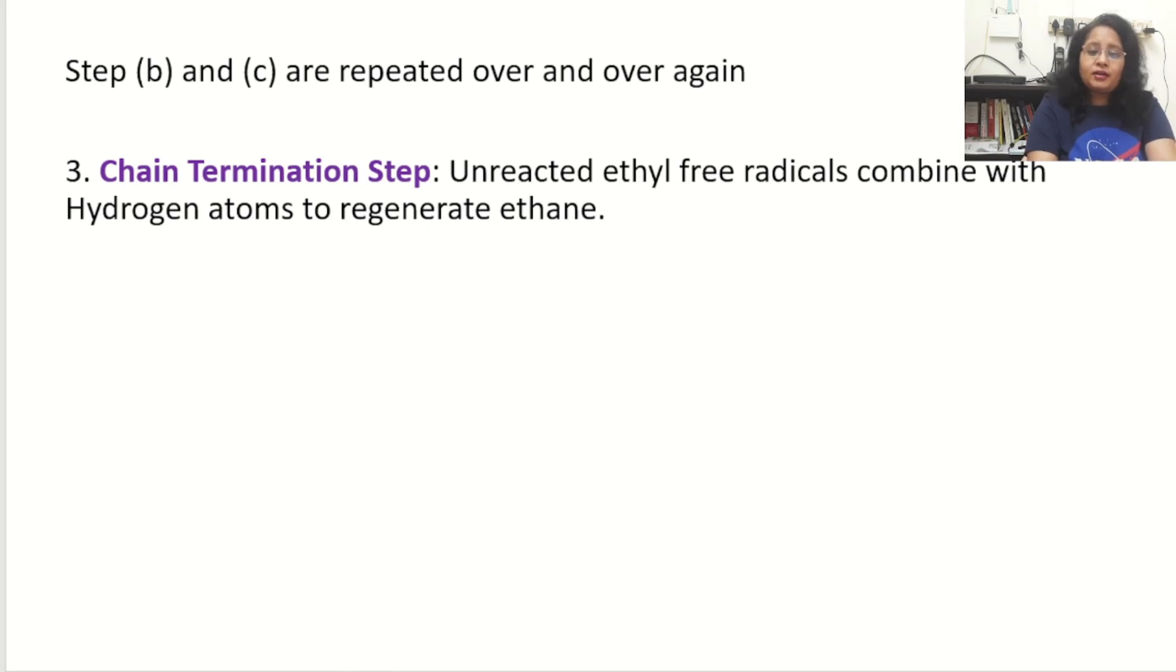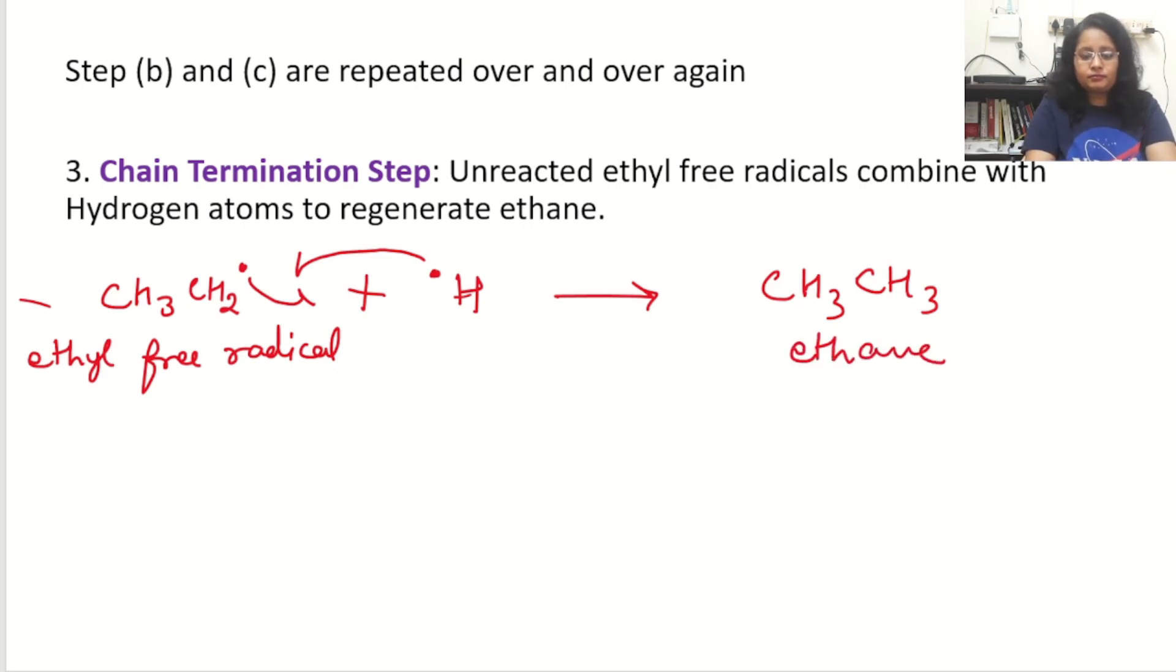Chain termination step: unreacted ethyl free radical combines with hydrogen atom to regenerate ethane. The ethyl free radical will combine with the hydrogen atom. So CH3 and this electron will go here and this electron will go here and they will make a bond, CH3CH3. The hydrogen atom will attach to the ethyl free radical and it will give ethane. This is the chain termination step.